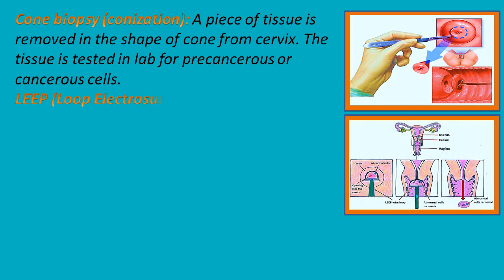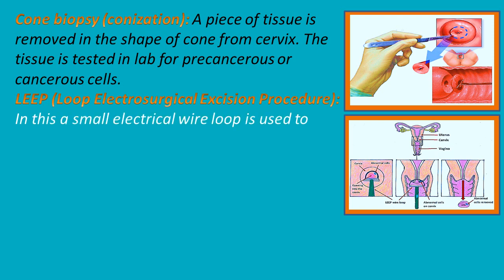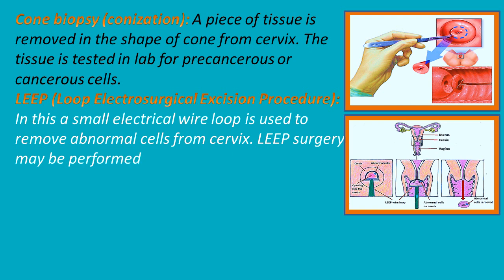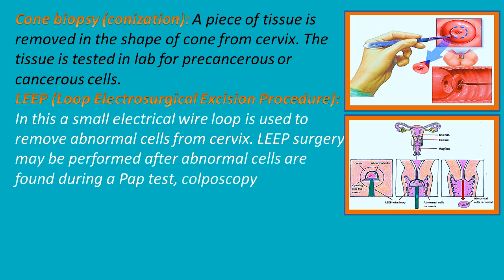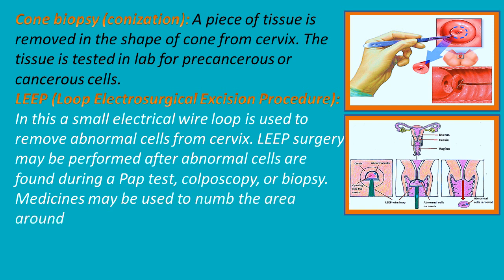LEEP — loop electrosurgical excision procedure. In this, a small electrical wire loop is used to remove abnormal cells from the cervix. LEEP surgery may be performed after abnormal cells are found during a Pap test, colposcopy, or biopsy. Medicines may be used to numb the area around it so to lessen discomfort during the procedure.